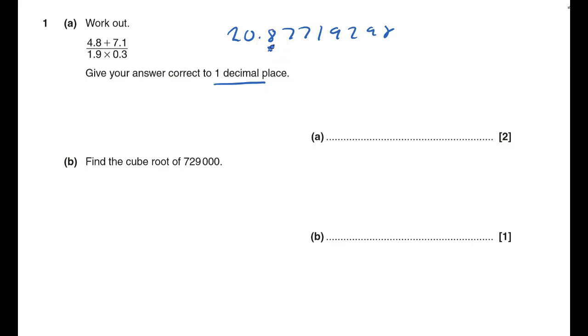It says one decimal place. There needs to be one number after the decimal point. The next number is a seven, so I need to round it up. So it's 20.9.